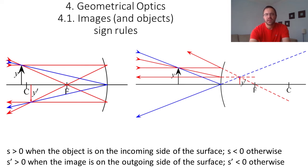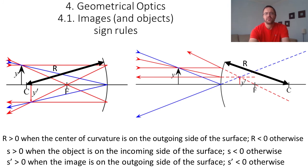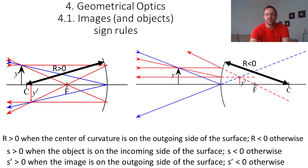Since we're talking about sign rules, one more applies to curved surfaces. The radius of curvature of a mirror, lens, or interface is labeled r. r is positive when the center of curvature is on the outgoing side of the surface, and negative otherwise. For a concave mirror, the center of curvature is on the left and the outgoing side is also on the left, so r is positive. For a convex mirror, the center of curvature is on the right but the outgoing side is on the left, so r is negative.